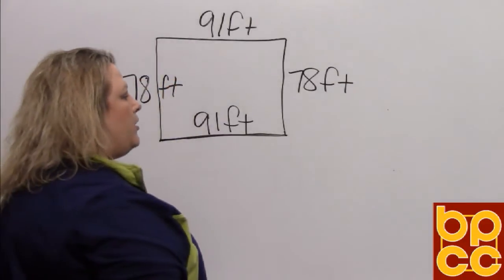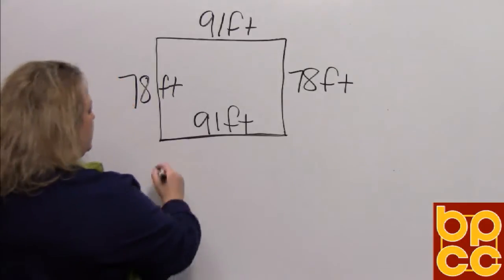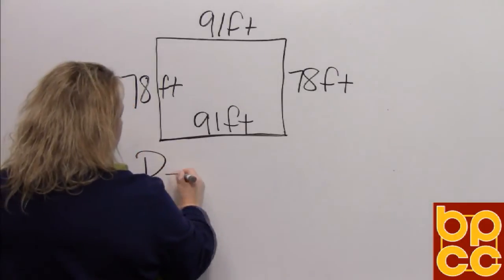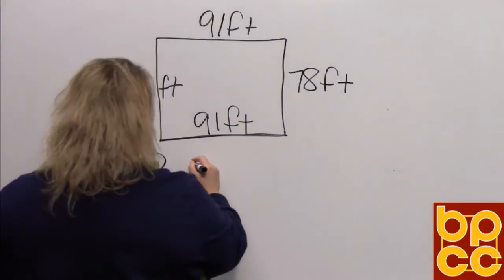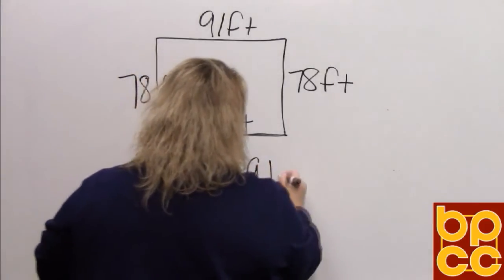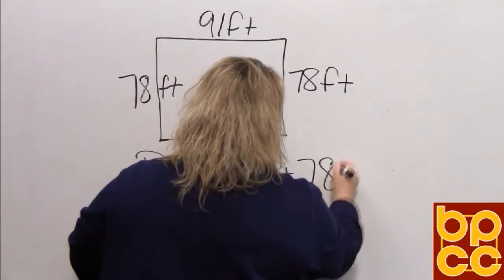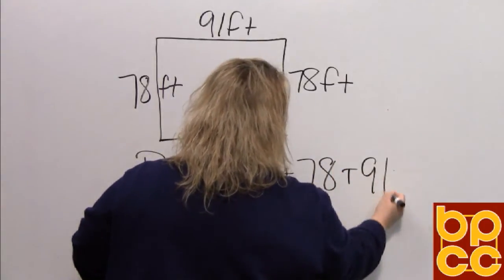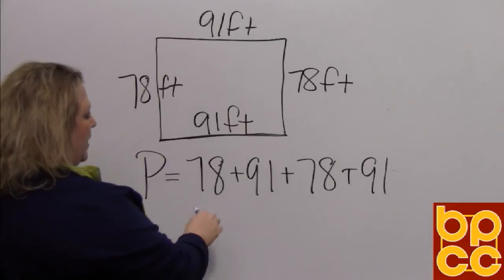So to find the perimeter, all you have to do is add all four sides together. So that would be P for perimeter is equal to 78 plus 91 plus 78 plus 91. And then you add the sides together.